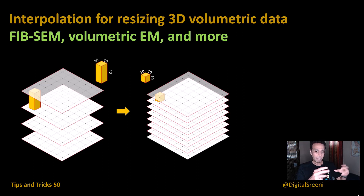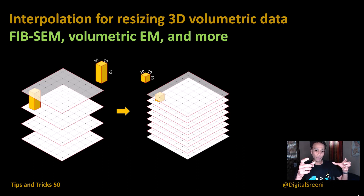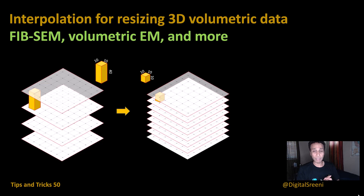In terms of z you cannot slice your samples thin enough to get three, four, or five nanometers, so you may end up with 10 nanometers or 40 nanometers in z. Your volume is not isotropic — in the example you see on screen, you have a 10 nanometer pixel size but the voxel itself is 10 by 10 by 40.